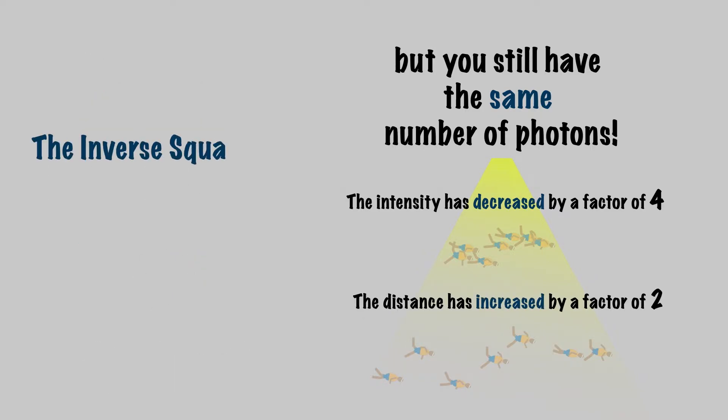This is known as the inverse square law. The intensity is inversely related to the square of the change in distance. So as SSD increases, the number of MUs needed will also increase in order to make sure more of your downstream runner photons are available to interact with your target.